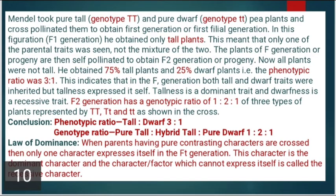Mendel took pure tall and pure dwarf plants and cross-pollinated them to obtain the F1 generation, or first filial generation. In the F1 generation, he obtained tall plants. The F1 plants were then self-pollinated to obtain the F2 generation. In the F2 generation, he obtained 75% tall plants and 25% dwarf plants in a ratio of 3:1. He found the phenotypic ratio to be 3:1 and the genotypic ratio to be 1:2:1. Based on the Monohybrid Cross, Mendel proposed two laws: the Law of Dominance and the Law of Segregation.